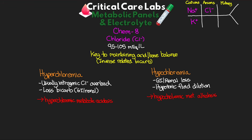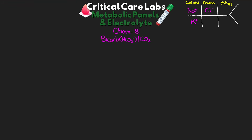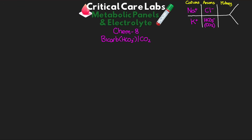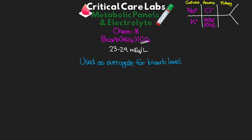Now let's talk about our bicarb or CO2. This is another anion that reports below chloride in our result skeleton. This is actually reporting out our CO2, with a normal value of 23 to 29 mEq per liter. Our CO2 is used as a surrogate for our bicarb level — 95% of the CO2 that's measured is actually bicarb — and as you know, this plays an important role as a buffer in our acid-base balance.